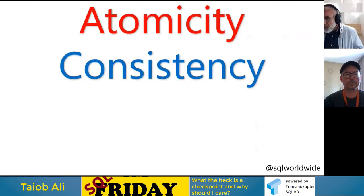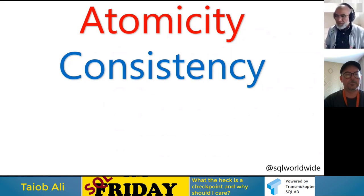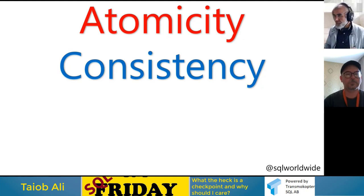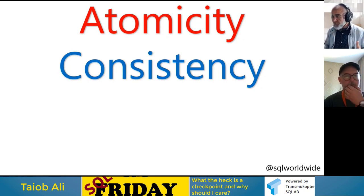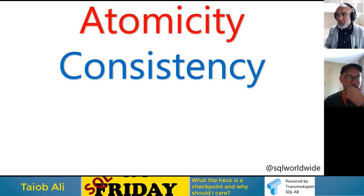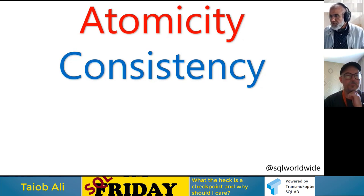Consistency is in my opinion the most confusing of the four ACID properties. It means we have mechanisms to ensure data correctness — primary keys, unique keys, check constraints, foreign key constraints, and range constraints on columns. These are tools a data professional uses to make sure data remains correct and valid according to defined rules.